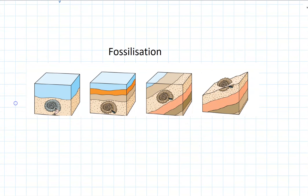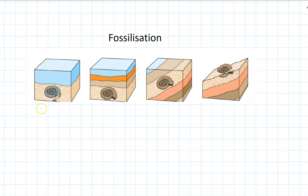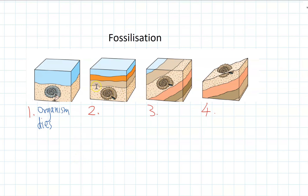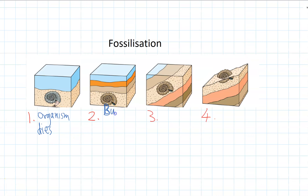Going back to fossils, we need to know the process of how fossils are made, which is called fossilisation. It's a four-step process. First, the organism dies and falls to the bottom of its lake or ocean, or to the ground wherever it was living. Then over millions of years, lots of sediment — dirt or rocks — starts to build up on top of that dead organism, so the organism gets buried underneath sediment.